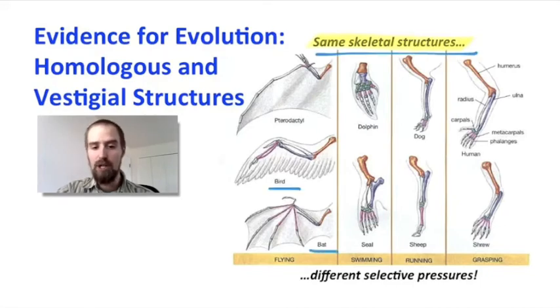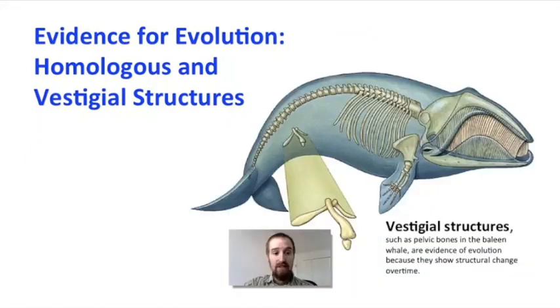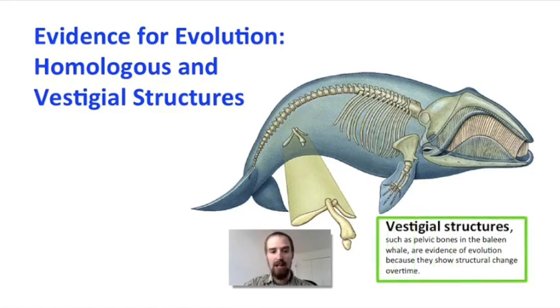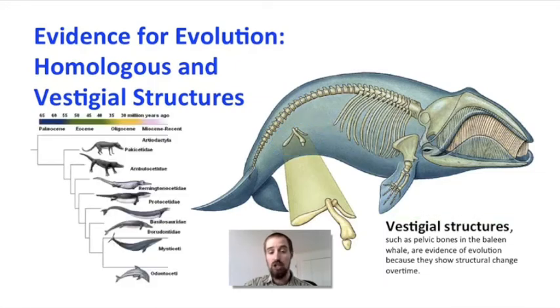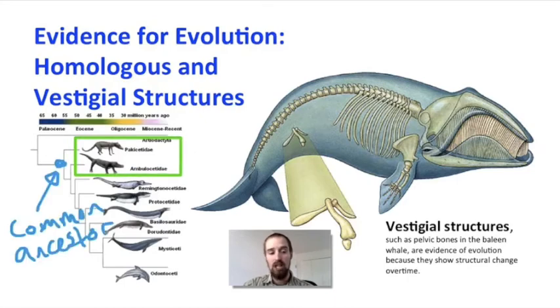So even if birds, bats, and pterosaurs evolved their wings independently, these wings are all just relatively minor variations on the same basic plan for a forelimb. Vestigial structures are also evidence of evolution because they show us the evolutionary heritage of an organism. The pelvic or hip bones in a whale are such an example. Whales don't need a pelvis today because they don't have any back legs, but still they have a pelvis. This shows an evolutionary heritage that involves shared ancestry with organisms who did have back legs, organisms that walked on land.